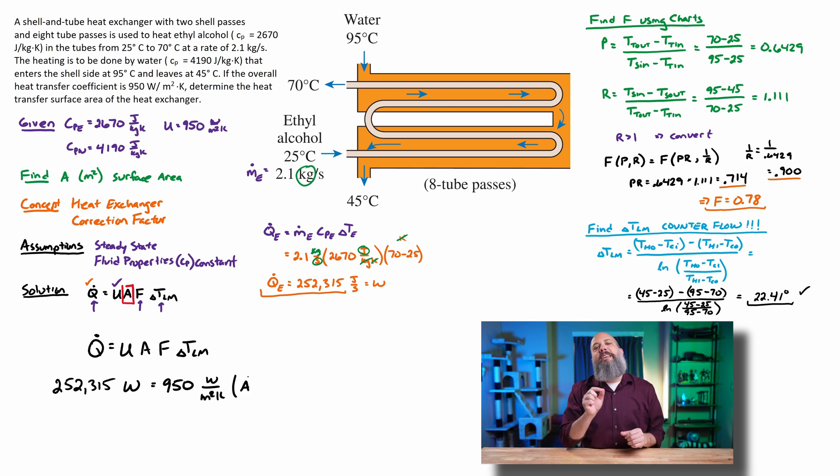A is the final answer we are looking for. Correction factor F, 0.78. This is a percentage. It's like an efficiency. So this is going to mean that we're only 78% as effective.